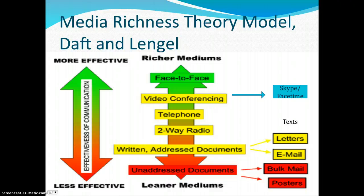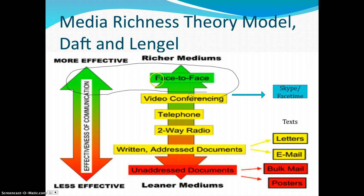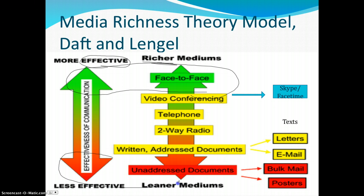What we're going to look at is communication and how well it works. What media richness theory says is that Daft and Lengel argued that communication can be effective and very rich. At the very top of the model, you see a green arrow — that is the richer, more effective communication. When we think of richness, richer mediums are oftentimes more effective. On the very bottom, you have the red, leaner mediums — they're very light in their communication and less effective. The media richness theory model contrasts leaner communication, which is less effective, with richer communication.